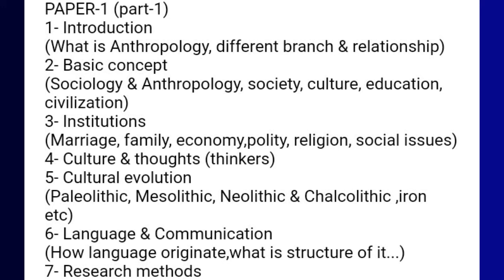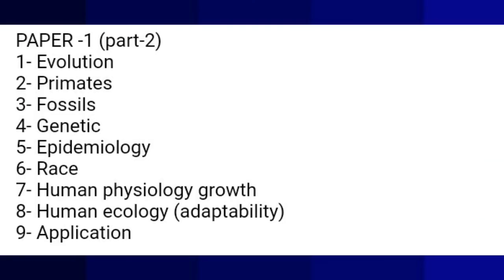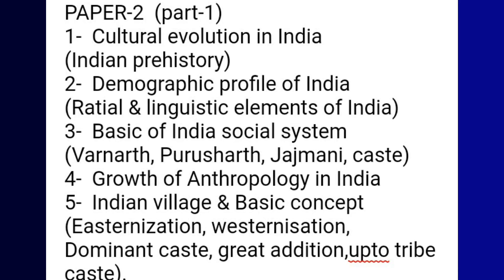This is Paper 1 Part 1. Paper 1 Part 2 is Physical Anthropology: First, Evolution; Second, Primates; Third, Fossils — these three things are covered in Paper 1. Fourth is Genetics. Fifth is Epidemiology. Sixth is Race. Seven is Human Growth.